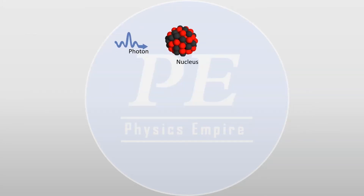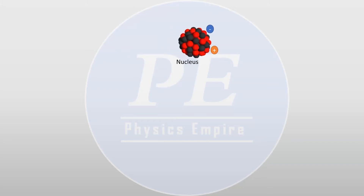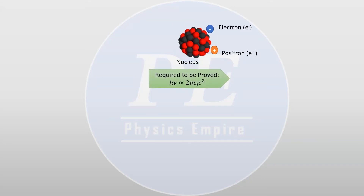In this example, a photon strikes a nucleus initially at rest and creates an electron-positron pair at rest. We shall show that the energy of the photon in this case is twice the rest energy of the electron.